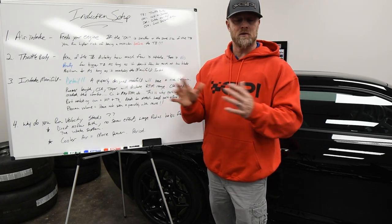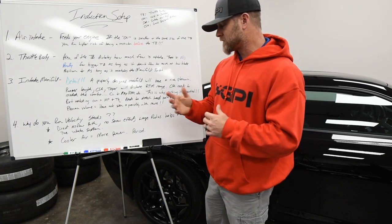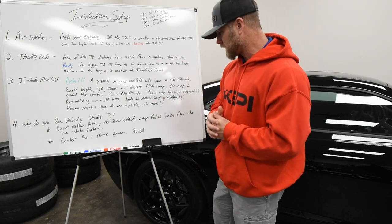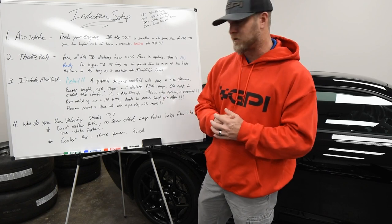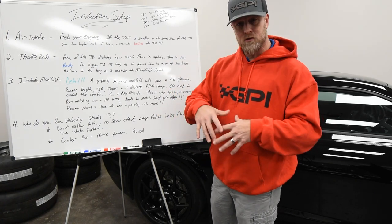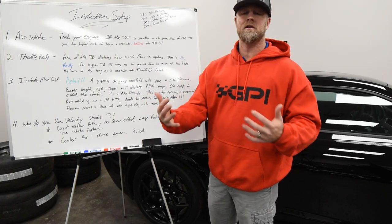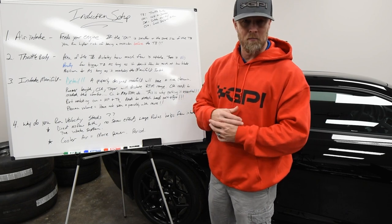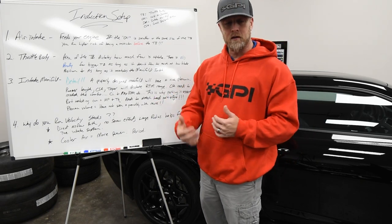Having the most direct airflow path and the coolest air charge available is always worth power. That's why we run velocity stacks and over-the-radiator setups — it's simply the most direct way to get cool air to the engine. On the velocity stack, notice that large radius bell shape: it helps airflow transition smoothly into the induction system versus having sharp-cut edges on the end of a pipe. The large radius always helps airflow find its way in.